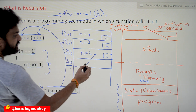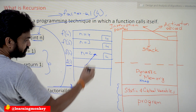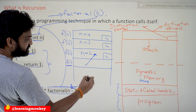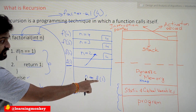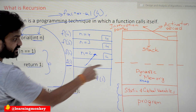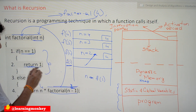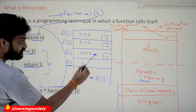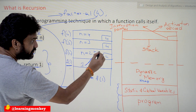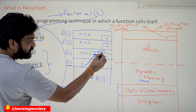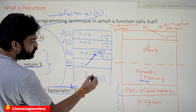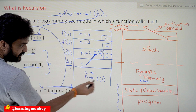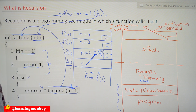f(1) returns 1. It returns 1 back to f(2). In f(2), execution was halted at n into factorial(1). Now factorial(1) has returned 1, and the value of n in f(2) is 2. So 2 into 1 equals 2 — f(2) returns 2.